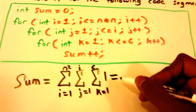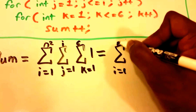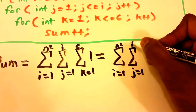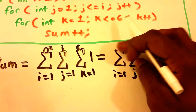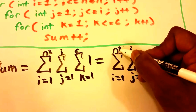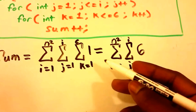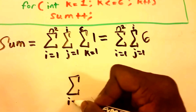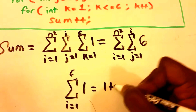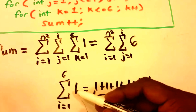Let's go ahead and simplify this. We get the summation from i equals 1 to n squared, and within there the summation from j equals 1 to i. That third summation — the summation from k equals 1 to 6 of 1 — just becomes 6, because of the formula. The summation from i equals 1 to 6 of 1 is just 1 plus 1 plus 1 plus 1 plus 1 plus 1, so it's adding that one value six times.